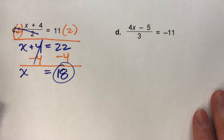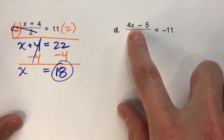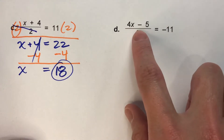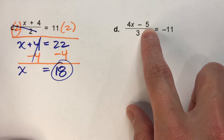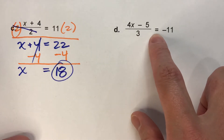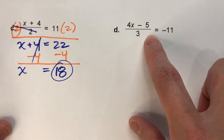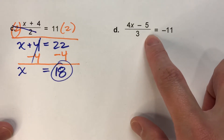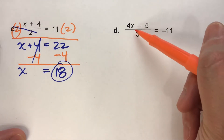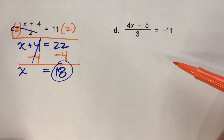I saved the hardest one for last. We've got x, we multiplied it by 4, then we subtracted 5, and then we took that answer and divided it by 3, and we equaled negative 11. So there are three things being done here, and we're going to undo all three. The last thing they did to x was divide it by 3, so that's the first thing we need to undo.